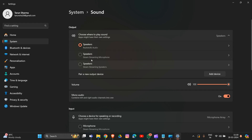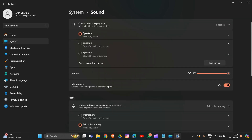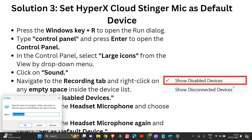You have to choose the correct speaker for input and output for both of them. Now we are going to the solution to set the HyperX Cloud Stinger as the default device.